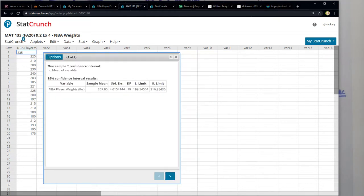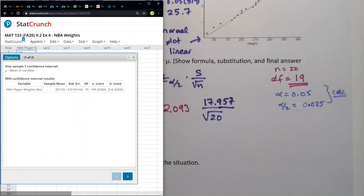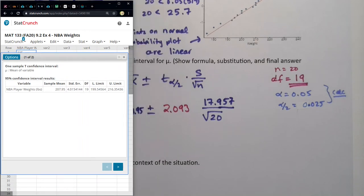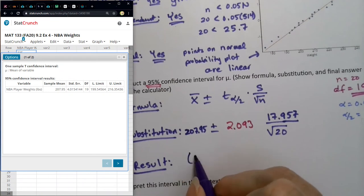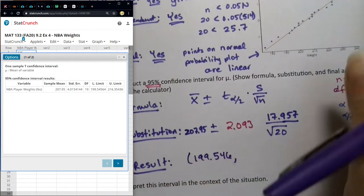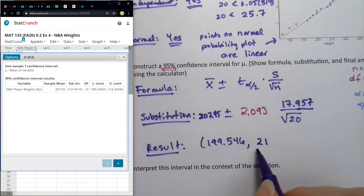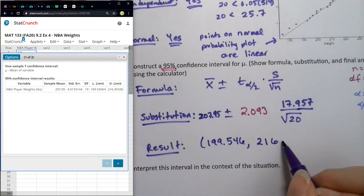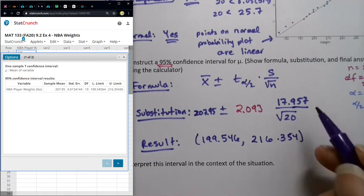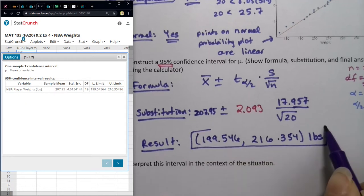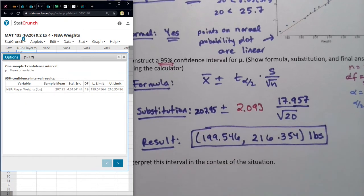So there's our results and our answer. Our result is 199.546 and you're putting parentheses around it because it's an interval. That's mathematical notation, basically saying all the values between these two numbers, 216.354. Now remember, this isn't percentages, this is pounds. This has a unit. So we could put pounds after the whole interval, or you can put pounds after each of those items. But one way or another, it's pounds.